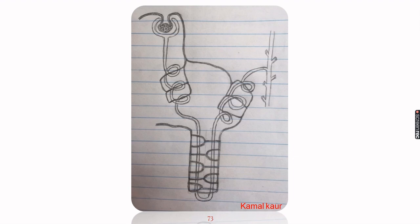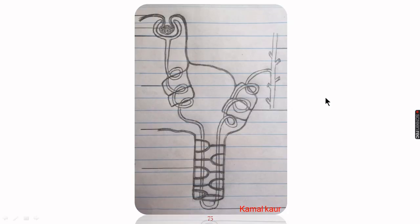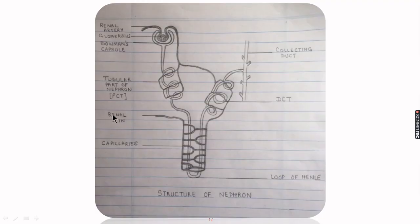We have now reached the labeling part. We will draw horizontal lines for all the parts we need to label. Normally labeling is done on the right hand side, but in this diagram most parts are on the left, so we will label on the left side also. Labels: renal artery; the bunch of capillaries called glomerulus; the cup shaped part called Bowman's capsule; the tubular part called PCT; renal vein; capillaries surrounding the loop of Henle; loop of Henle; the second tubular part called DCT; and the collecting duct which collects urine and passes it to the urinary bladder.